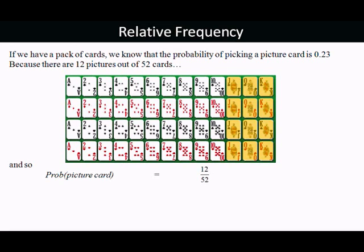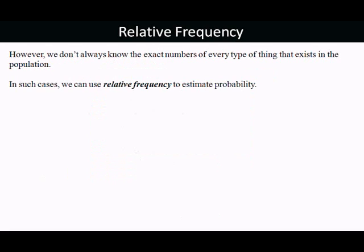There they are. And 12 out of 52 as a fraction is the same as the decimal 0.23 and a bit. So the probability of picking a picture card is 0.23. You can work that out.